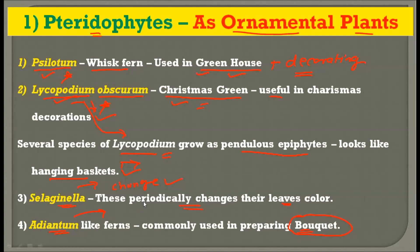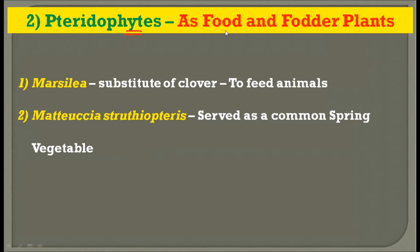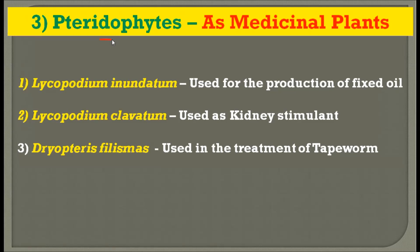The second economic application of pteridophytes is that they can be used as food or fodder. The first species is Marsilea, which acts as a substitute for clover to feed animals. The second species is Matteuccia struthiopteris, which can be served as a spring vegetable in many regions of the world like America and Canada. So pteridophytes have applications in both food and fodder.